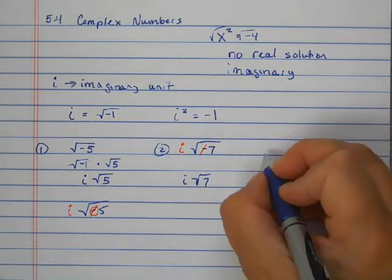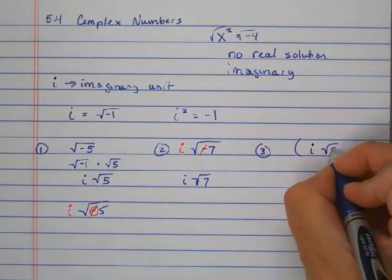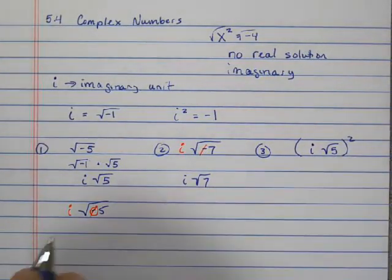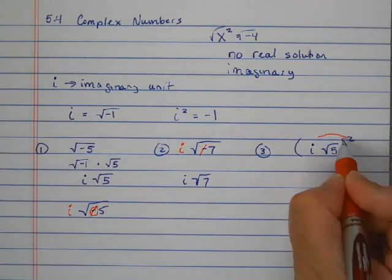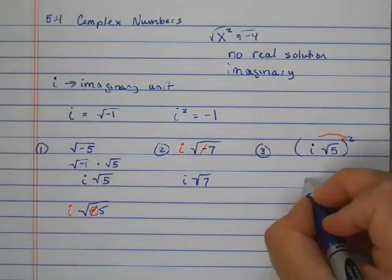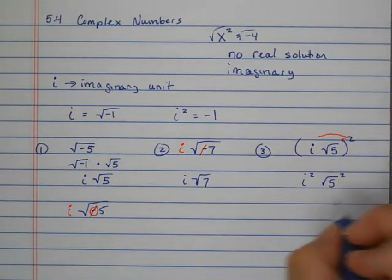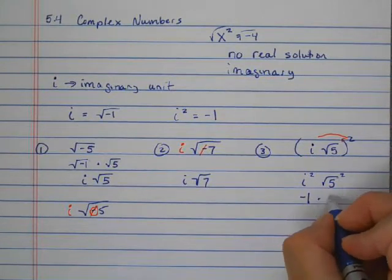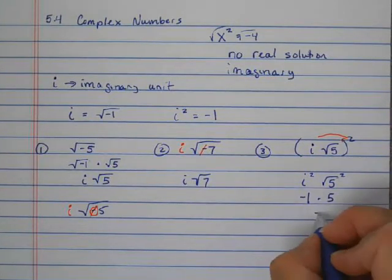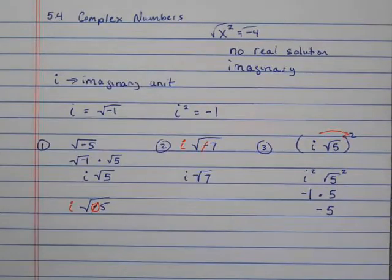What about a problem like this? Parenthesis i square root five, squared. So here I'm going to square both terms. I get i squared times square root five squared, and i squared is negative one, and square root five squared is five. So the answer to this one, a simplified version, would just be negative five. Now we're going to work more with that. We're going to first go into solving.